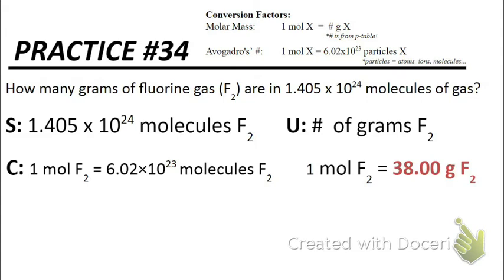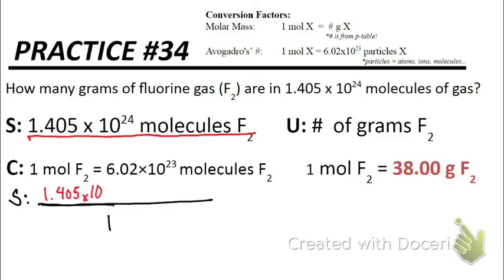So, now that I have all the tools that I need, I can go ahead and calculate the answer. Our setup is always the same. Start with what you know over 1. So that is 1.405 times 10 to the 24th molecules of F2. And again, don't abbreviate molecules. Write the whole word out. Otherwise, it's going to look like mole.